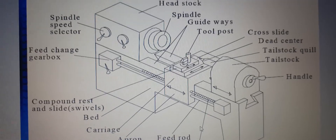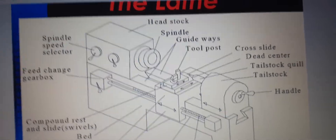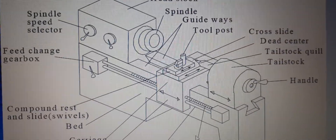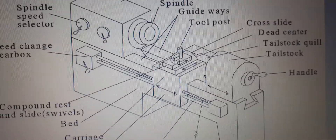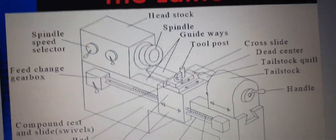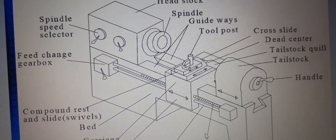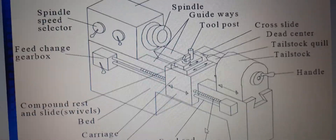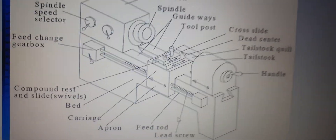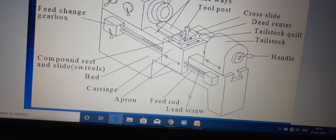The engine lathe is the simplest among lathes with all basic features. It is termed engine lathe since it is engine-driven. It is named center lathe since the job to be machined is held between two centers — that is, a live center and a dead center. We will discuss live center and dead center later on.